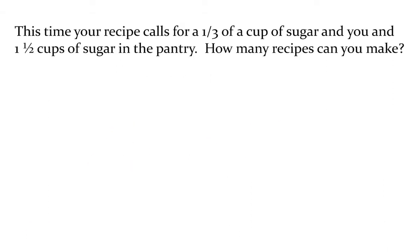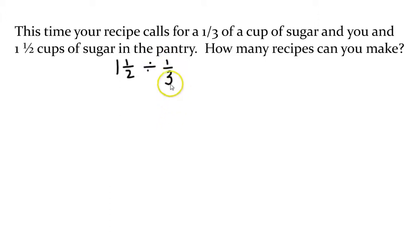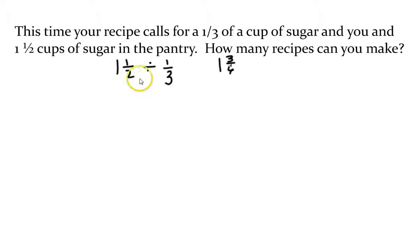This time our recipe calls for a third cup of sugar and you have one and a half cups of sugar in the pantry. How many recipes can you make? We're asking ourselves how many of those third cups can fit into one and a half. So our number sentence is one and a half divided by one third. In order to divide with an area model, we have to have common denominators, so we're going to change that — six on the bottom, since both two and three go into six.